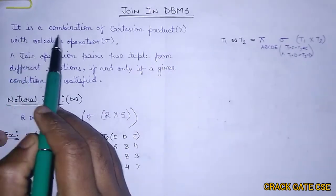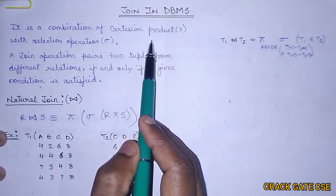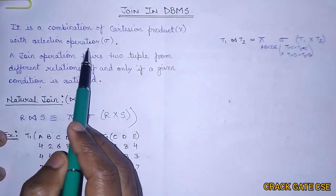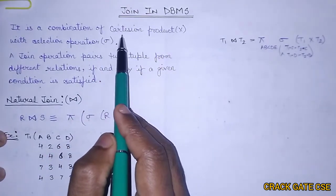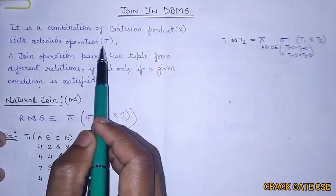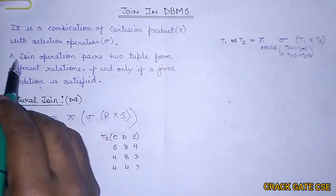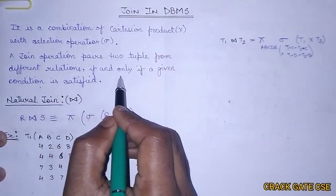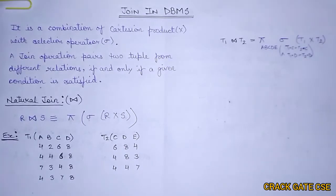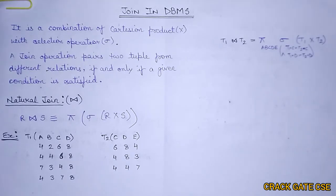What is a join? A join is a combination of Cartesian product — that is, cross product — with some selection operation. A join operation pairs two tuples from different relations if and only if a given condition is satisfied. That means if we have two relations R and S, there has to be some condition on the basis of which we can join the R and S tuples.